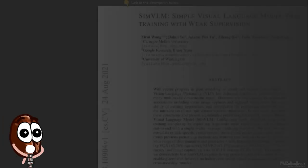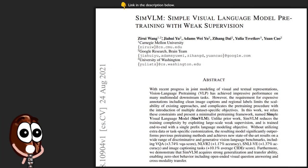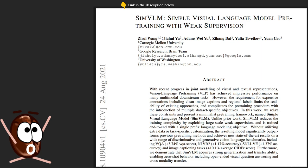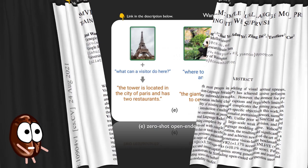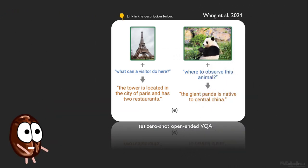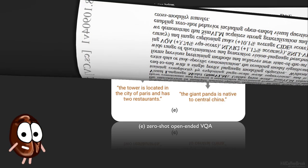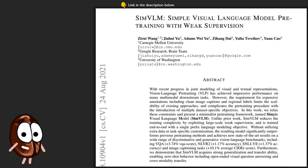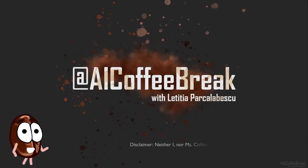It's official! The Google Brain team has joined the pre-trained vision and language models business. Their new model called SimVLM uses a simple training procedure and promises generative capabilities, generalization, and zero-shot behavior when it comes to tasks combining images and text. You can ask the model things by just alluding to what can be seen in an image, like where to observe this animal, and the model answers open-endedly. If you're curious about how SimVLM works, what the authors don't say, and how it compares to previous models, join us for this AI coffee break.